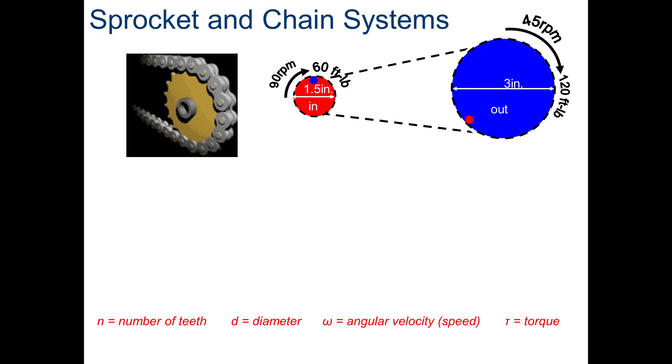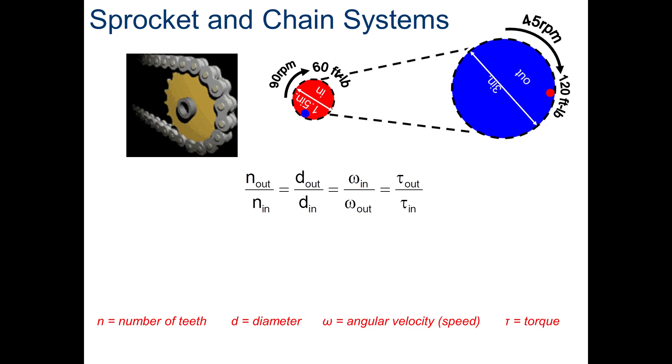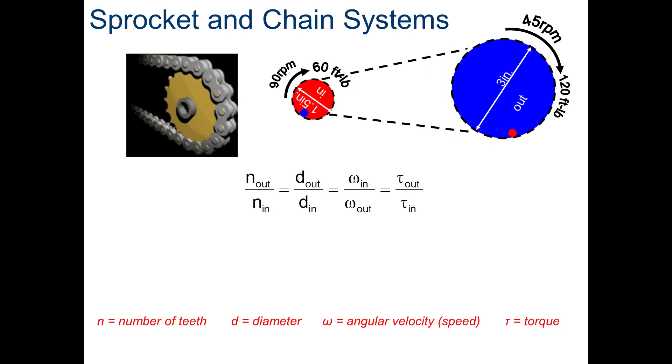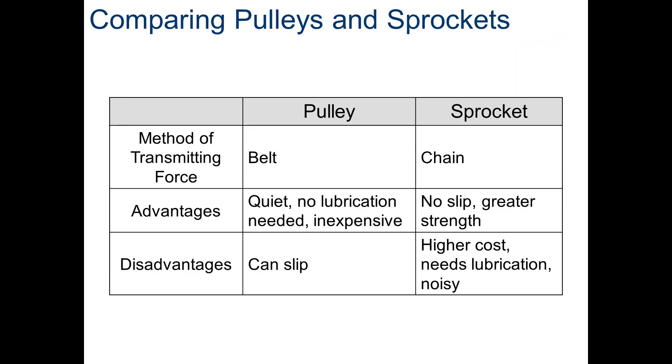Okay. Sprockets and chains, exactly the same as belts. We add back in N in and N out. Again, like I talked about, toothed belts, kind of a debate on whether they are more like chains or whether they are more like sprockets. Or more like belts or more like sprockets. So, calculations are exactly the same. Don't feel like I need to go through these real heavily. You should get a gear ratio of 2 to 1.